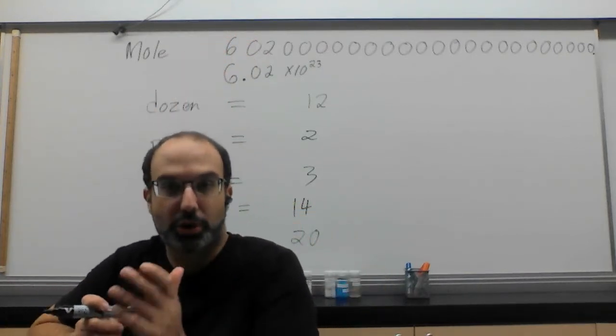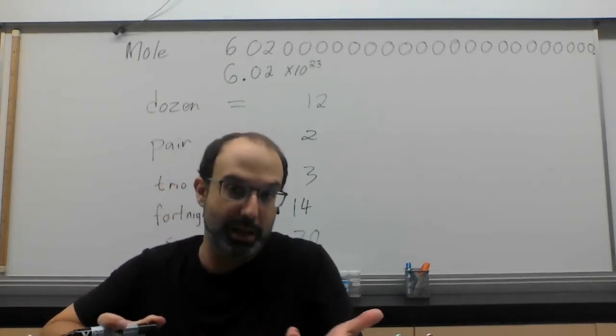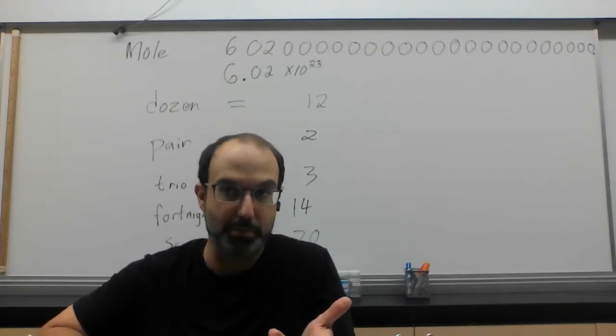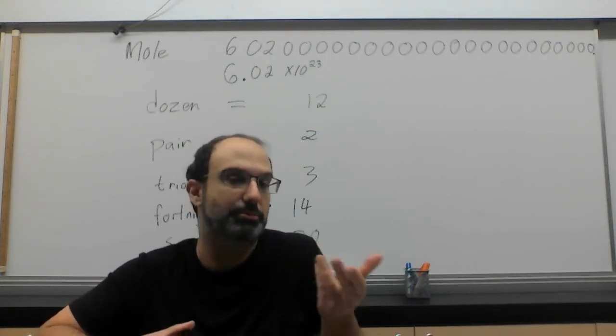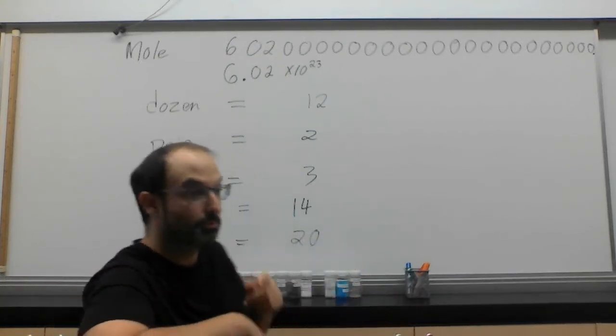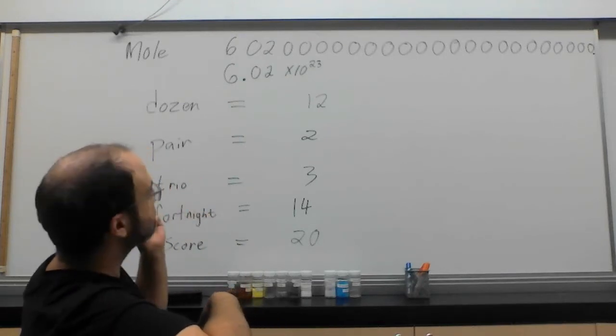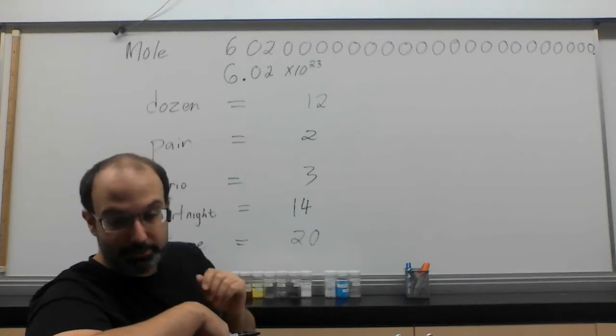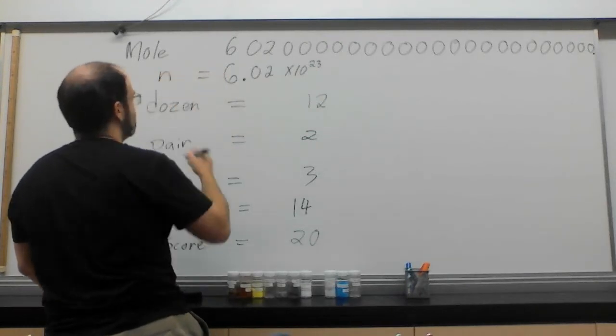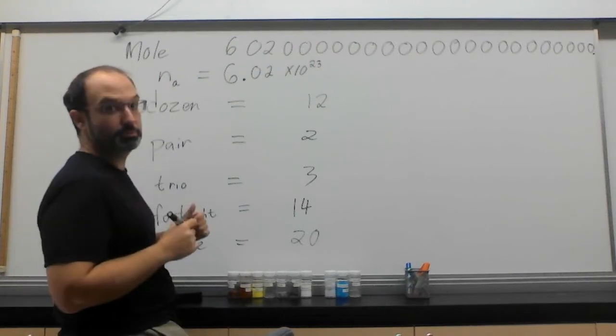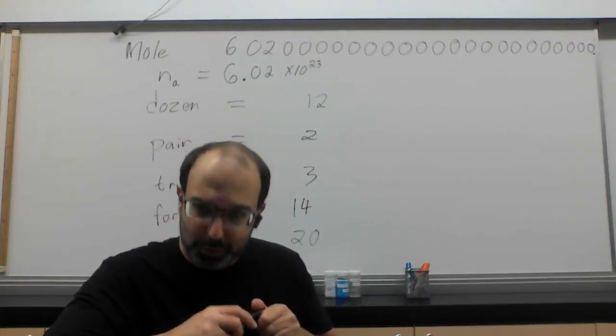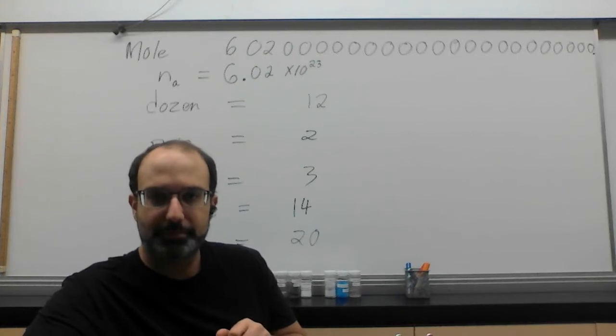So this is called Avogadro's number because we named it after the guy. You know you've done a good job in science when we name something after you. Avogadro's number, Planck's constant, the Newton of force, the Ohm of resistance, the Watt of power, the Volt, that's another one that's named after a guy. His name was Volta. Anyway, so Avogadro's number is usually abbreviated or given the symbol of N. Sometimes we'll put a little A underneath to say that it's Avogadro's number so we don't get it confused with some other N. And it is really critical for everything we do in chemistry, really critical.